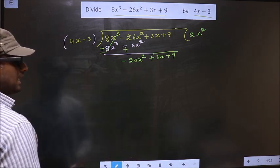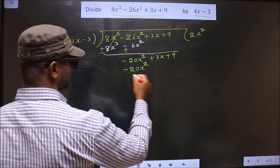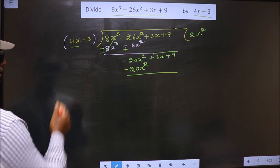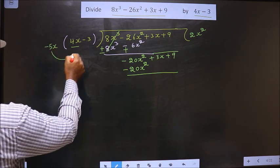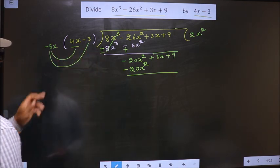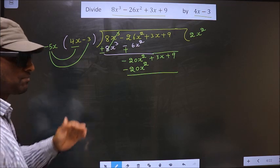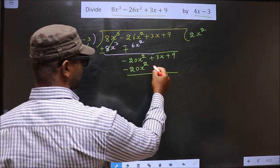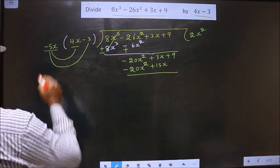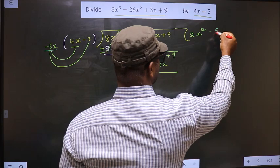Here we have minus 20x², so below this we should also get minus 20x². Here we have 4x, and to get minus 20x² we should multiply this with minus 5x. When multiplying to this term, we should also multiply to the other term: minus 5x into minus 3 is plus 15x. So below the x term I write plus 15x. This is the next term of our quotient, so I write minus 5x in the quotient.